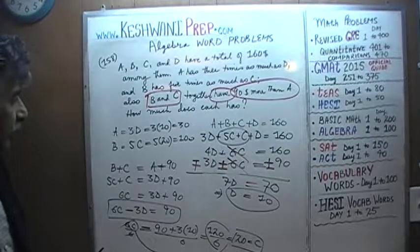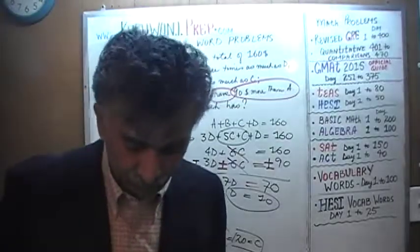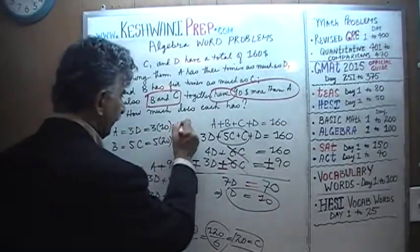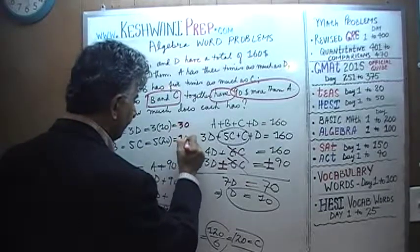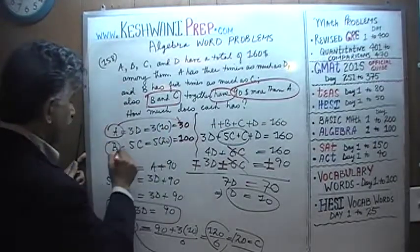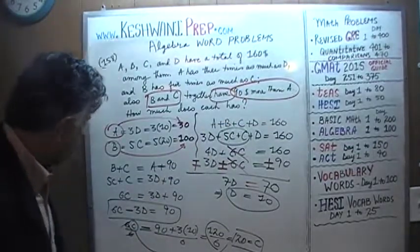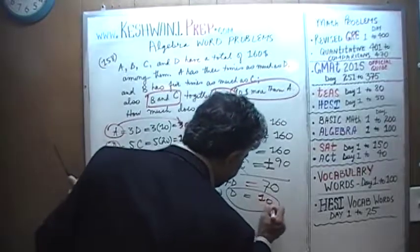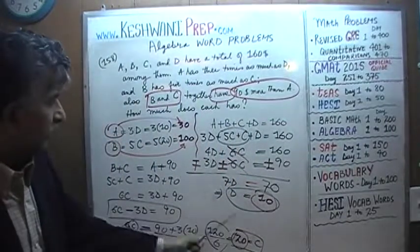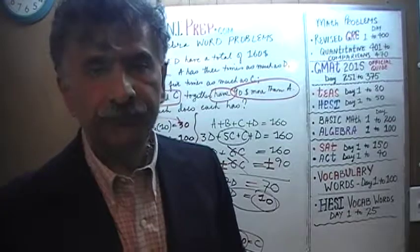The last thing we need to do is quickly verify our answer — make sure the values add up to 160. A = 30, B = 100: 30 + 100 = 130. C = 20 and D = 10: 20 + 10 = 30. 130 + 30 = 160. Our answer is in fact correct.